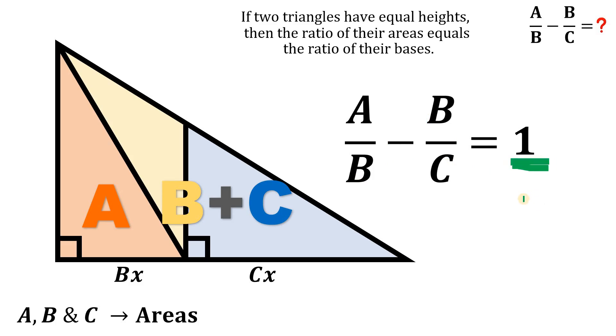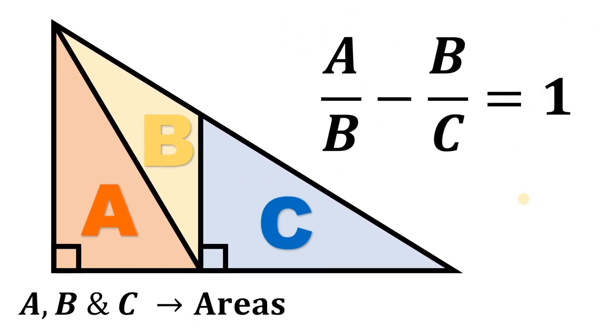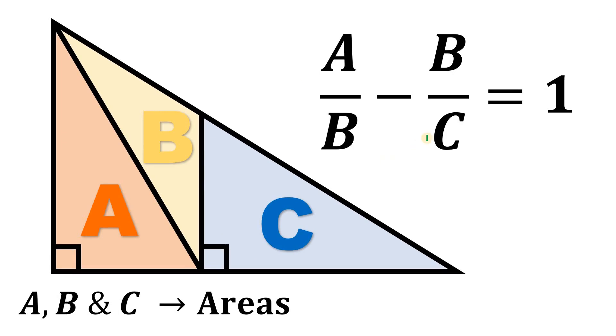And this is our answer to this question. Therefore, given this figure, then the value of A over B minus B over C simply equal to one. And as always, we are done.